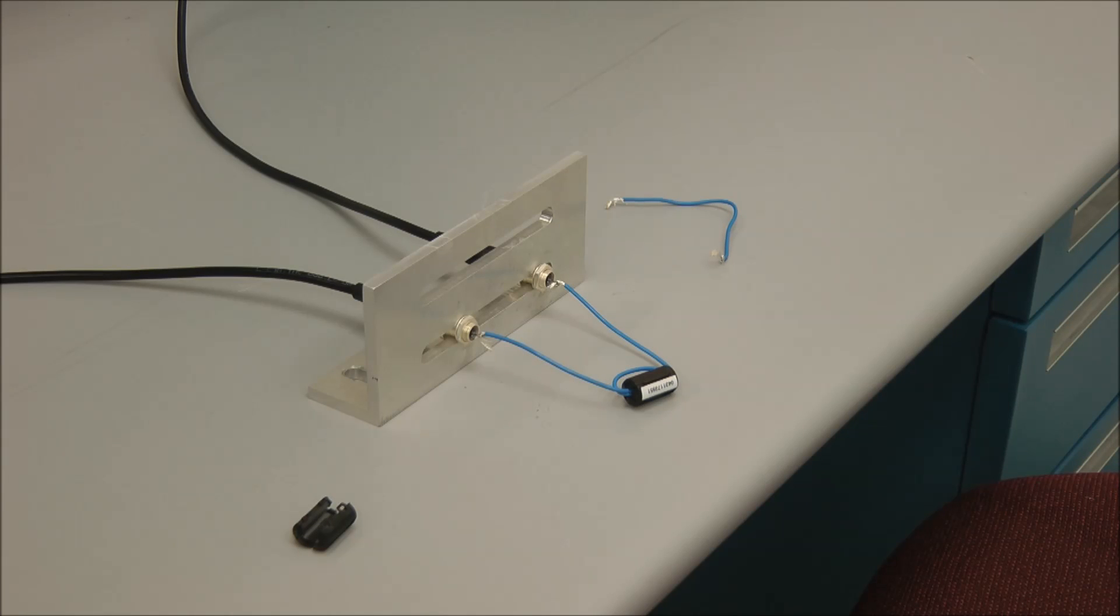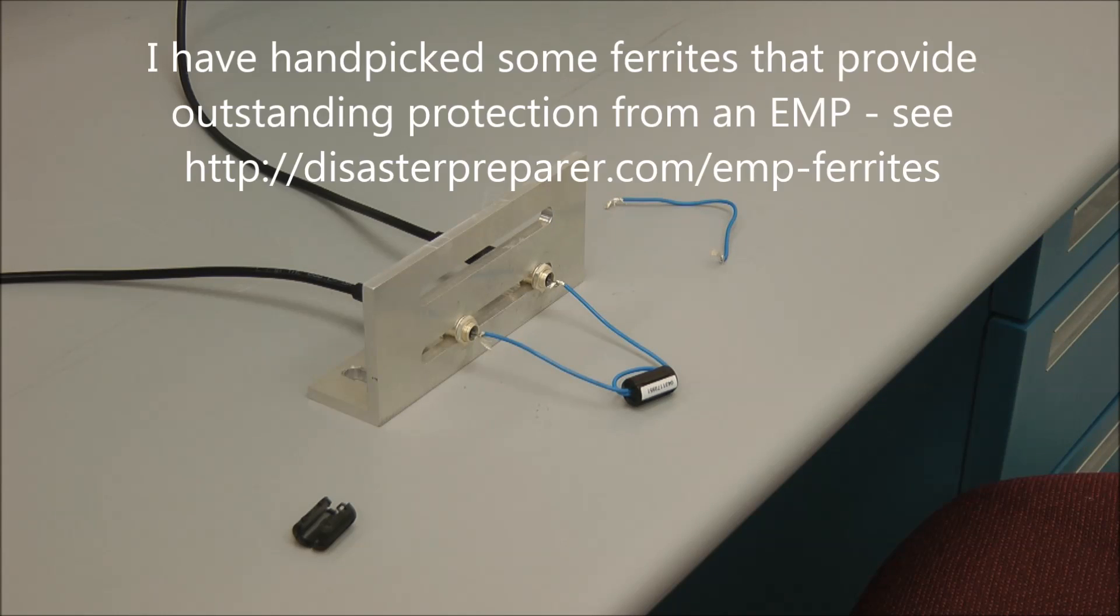So, again, hopefully this shows the general technique of using ferrites and how it's used to suppress transient pulses. Now, I will point out one thing is that ferrites have very specific frequency ranges in which they work. And so you want to make sure that you select ferrites that are, in the case of an EMP, very broadband. Because an EMP is a very broadband spectral event.